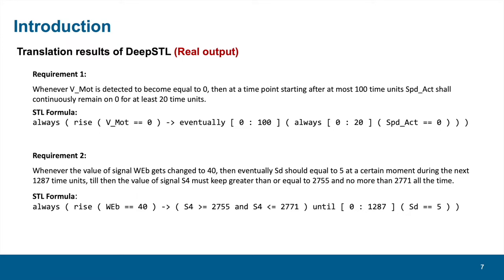The second requirement says, when signal V becomes 40, signal SD should be 5 at a time in the future within this time interval, and before this, the value of signal S4 should keep within this range all the time.